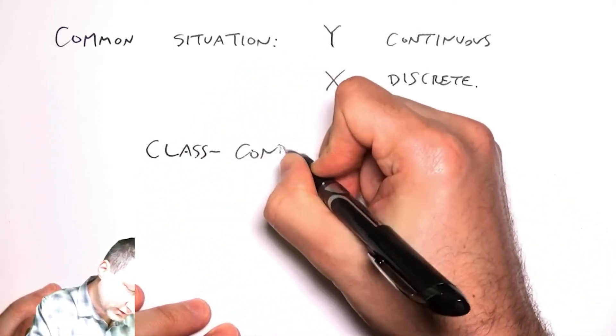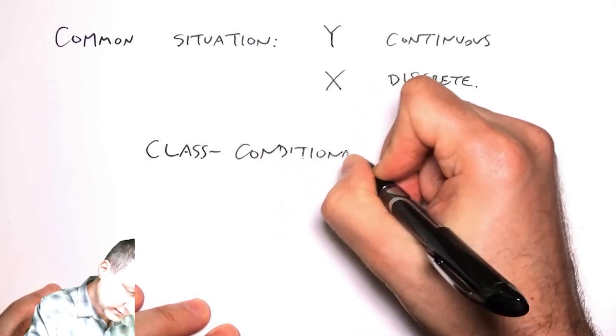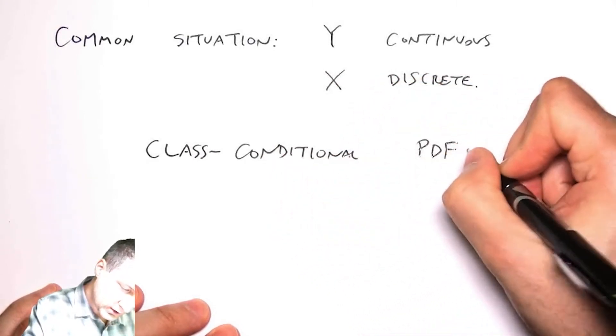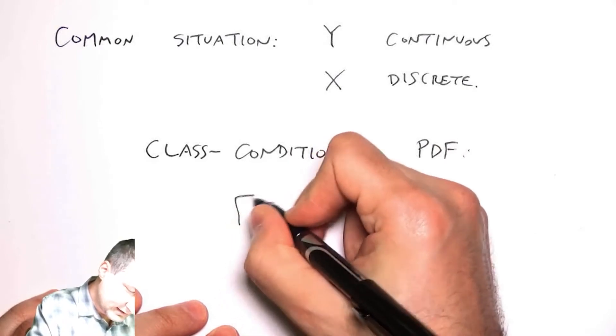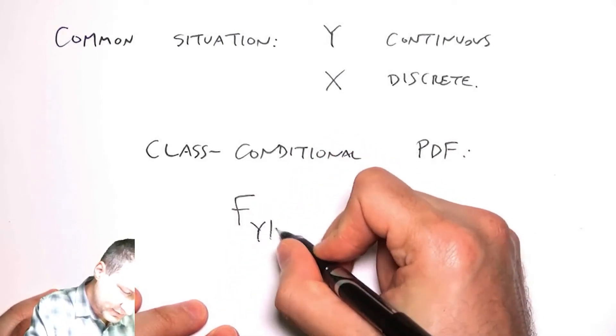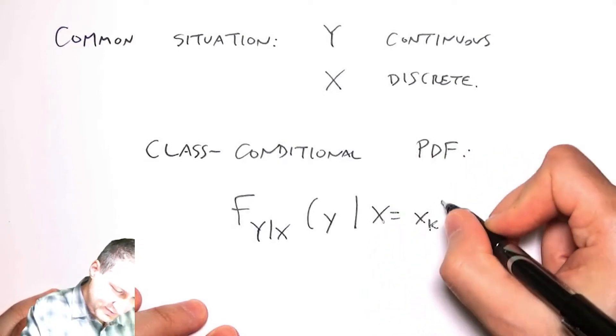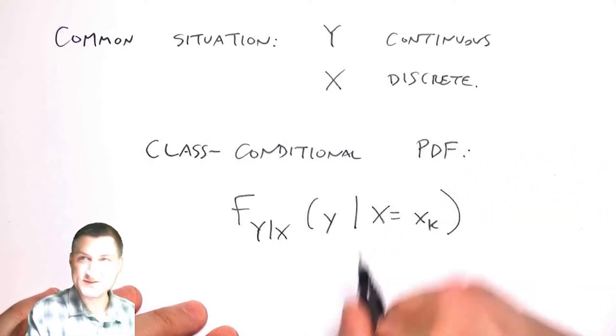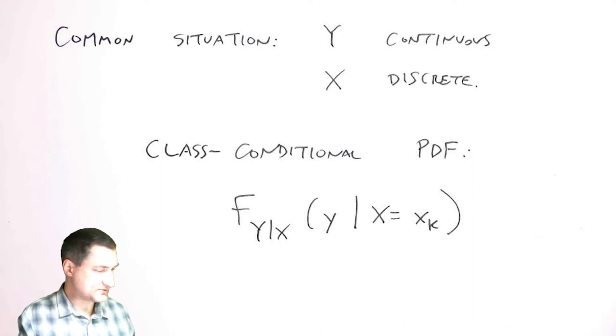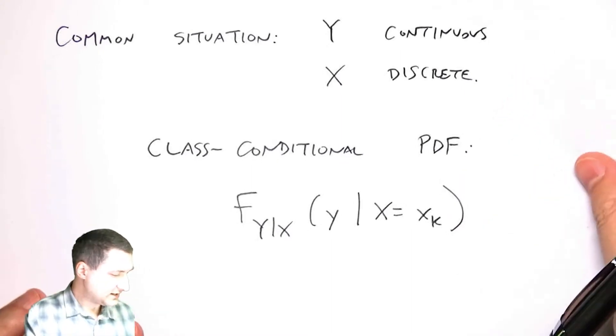We use f to talk about PDFs, and I'll be really explicit here. Again, y is some continuous number, x is some discrete number. So let me define that and then we'll do an example about what that means.